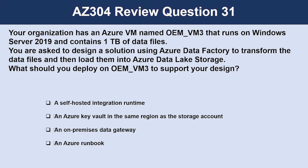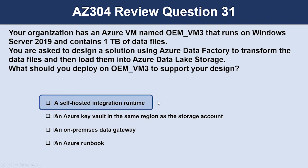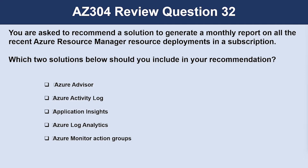Question number 31: Your organization has an Azure VM named OEM VM3 running Windows Server 2019 and containing 1 TB of data files. You are asked to design a solution using Azure Data Factory to transform the data files and then load them into Azure Data Lake Storage. What should you deploy on OEM VM3? The correct answer is a self-hosted integration runtime, which can run copy activities between a cloud data store and a data store in a private network.